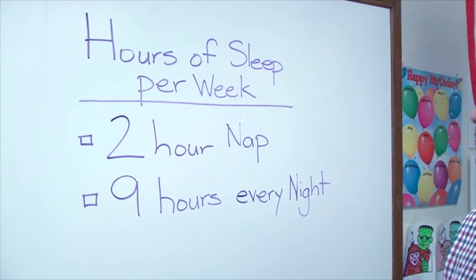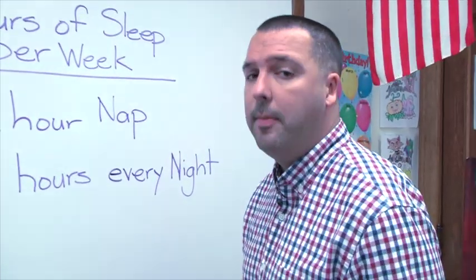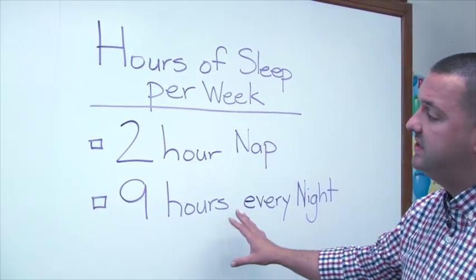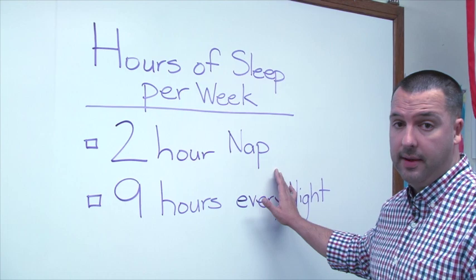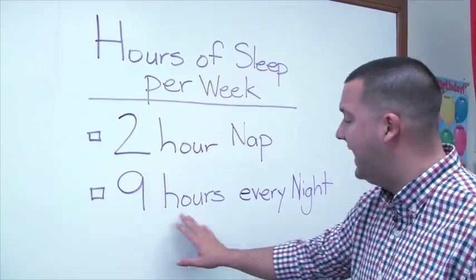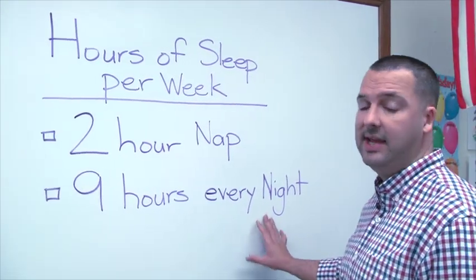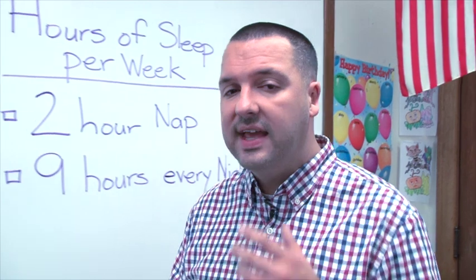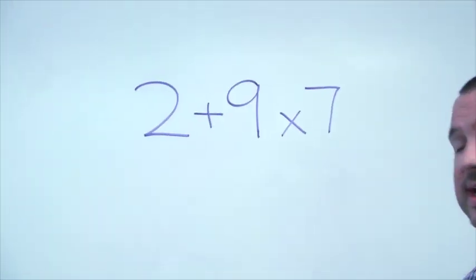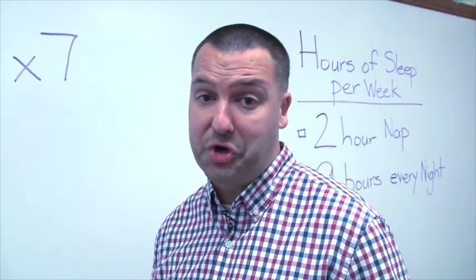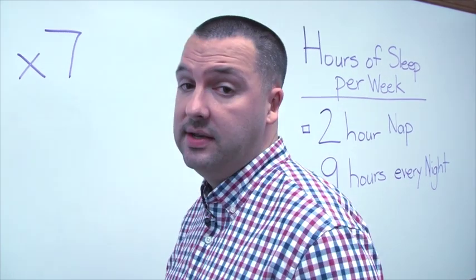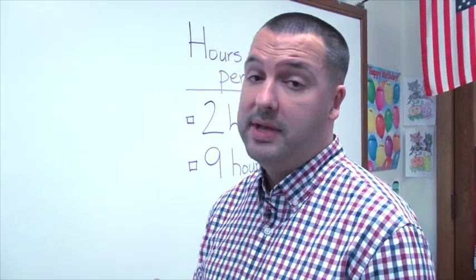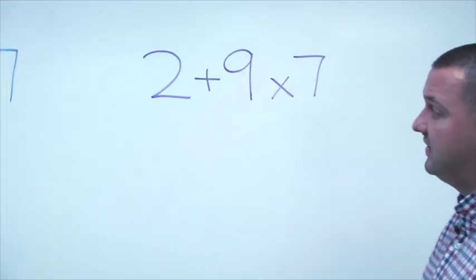Our friend Joe, who is a third grader, wants to figure out how many hours of sleep he gets per week. As we see on this little chart, he takes a two-hour nap once a week. And then every night, he gets nine hours of sleep. We want to figure out the total hours of sleep he gets per week. We're going to take a look at two problems — one is the correct way to do this keeping order of operations in mind, and one is incorrect.